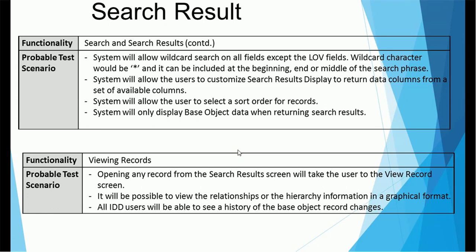Once you search, results are returned in tabular format but without full details. The system will allow wildcard searches on all fields except list-of-value fields where drop-downs are present. The wildcard character is the asterisk (*) and it can be included at the beginning, end, or middle of the search phrase. The system will allow users to customize which data columns are displayed in results from a set of available columns, and allows selecting a sort order. Search results will only display base object data — not xref or history records.